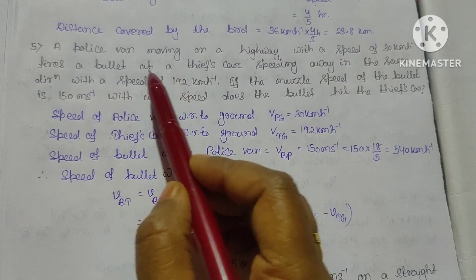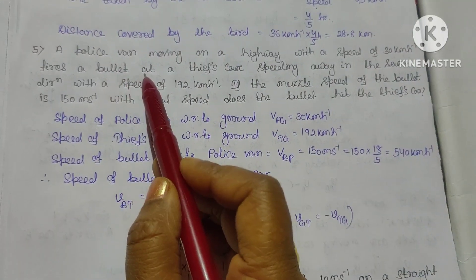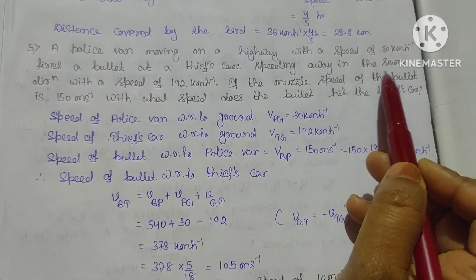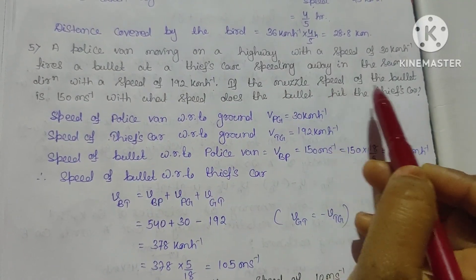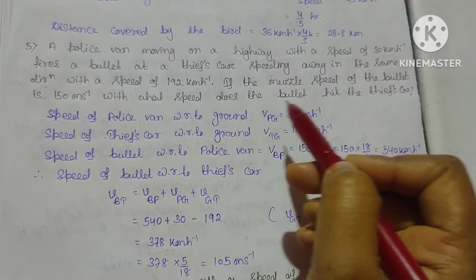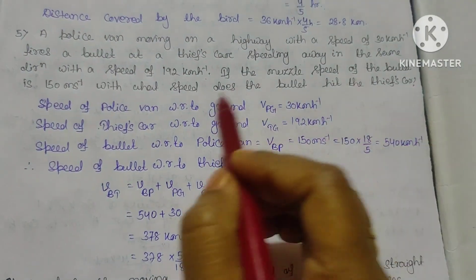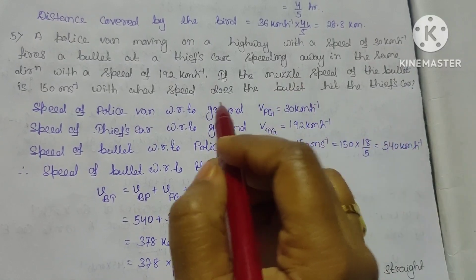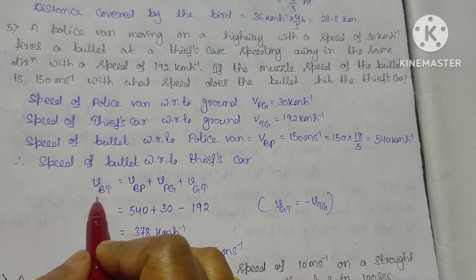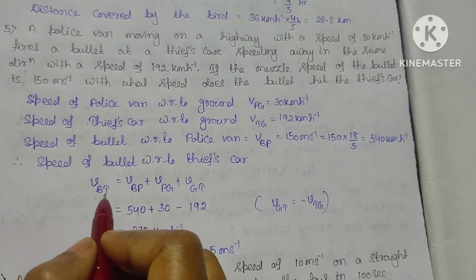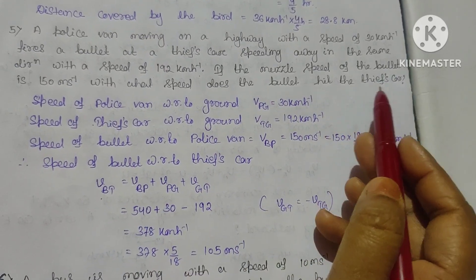Another question: A police van moving on a highway at 30 km/hr fires a bullet at a thief's car speeding away in the same direction at 192 km/hr. If the muzzle speed of the bullet is 150 m/s, at what speed does the bullet hit the thief's car? We need the relative velocity of the bullet with respect to the thief's car, VBT.